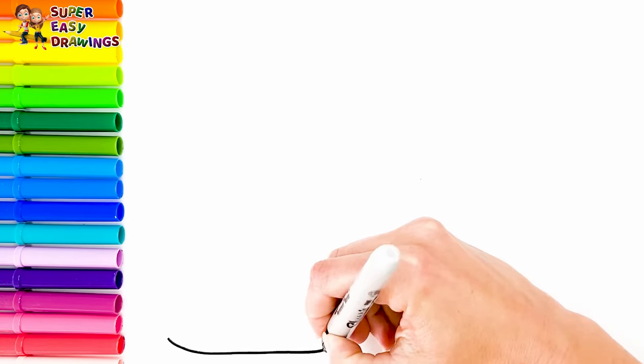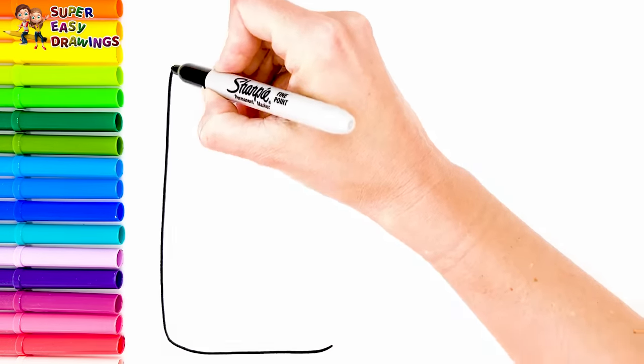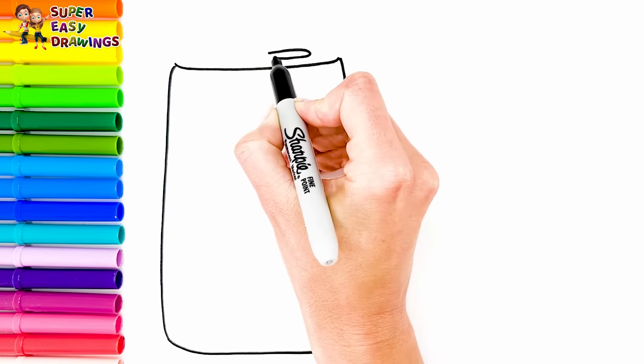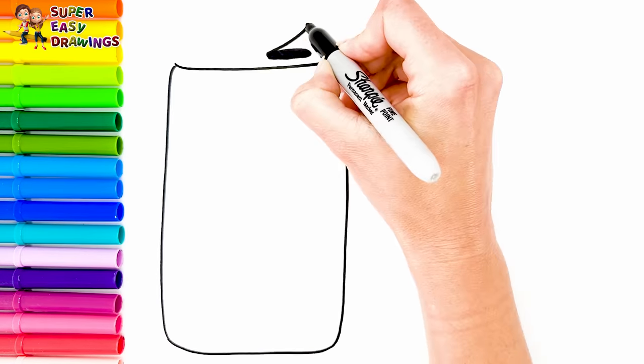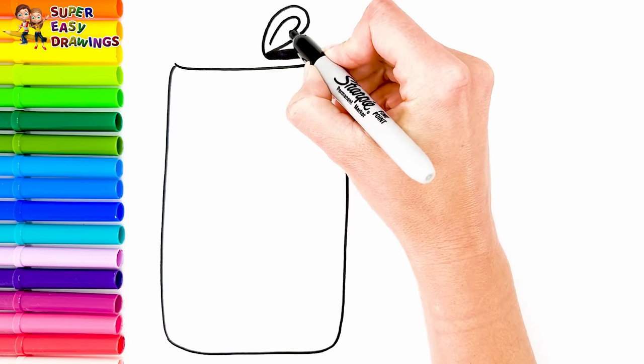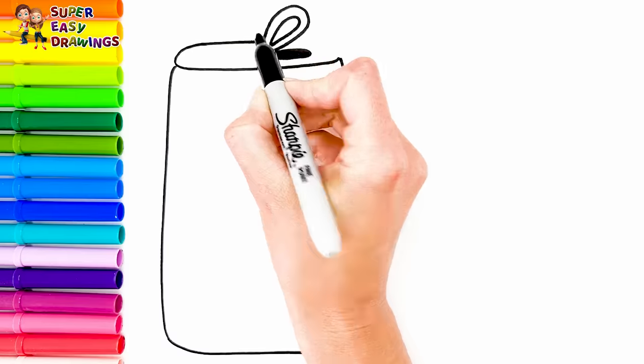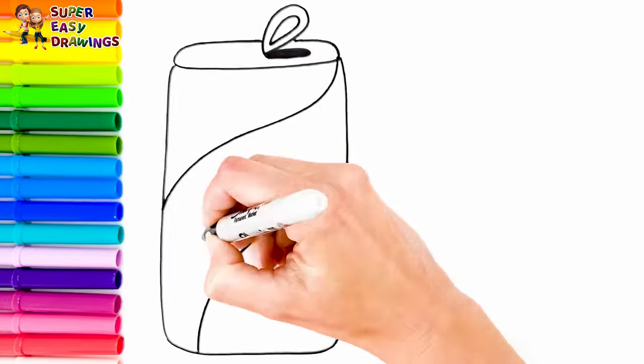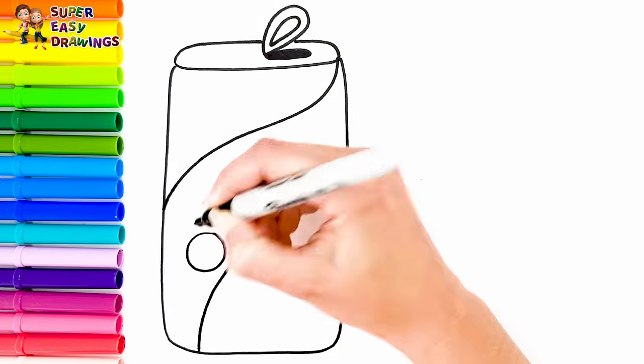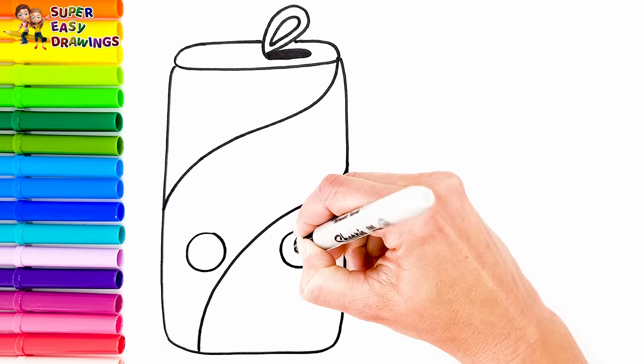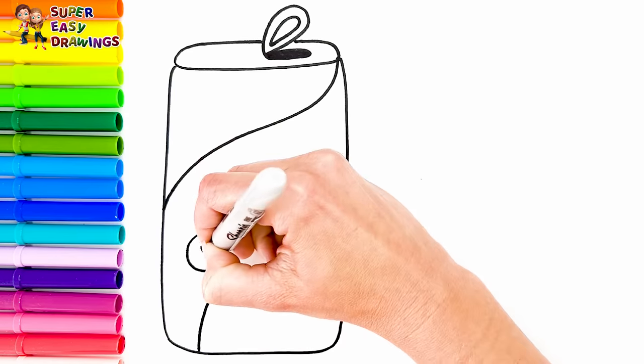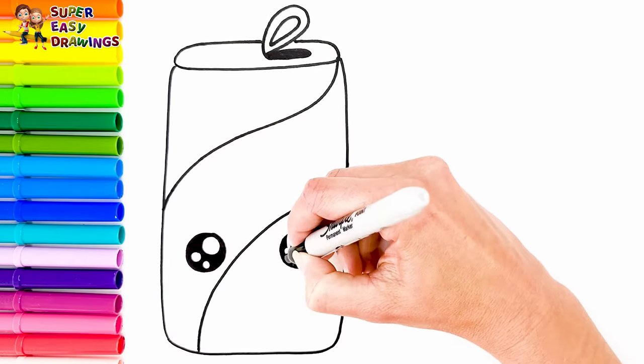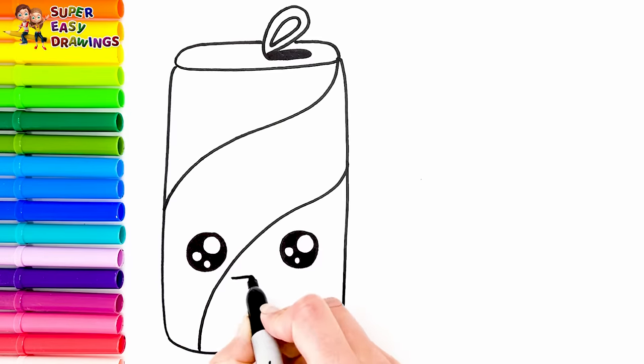Let's start drawing a can of coke like this. Now let's draw a cute face for this. Draw her cute eyes like this and a smiling mouth.